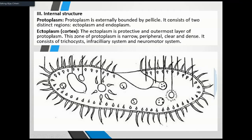The second part is the macronucleus, and the third part is the micronucleus. Protoplasm is the main integral part with those dependent components.